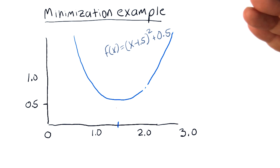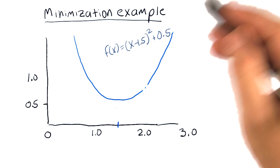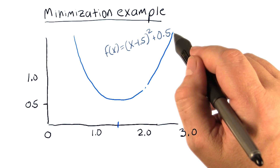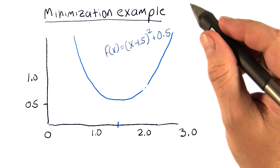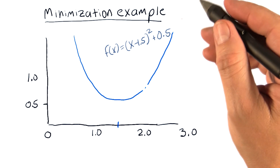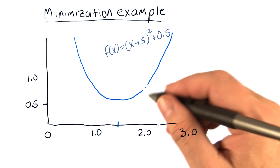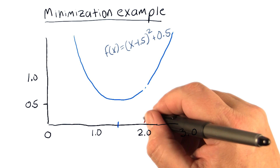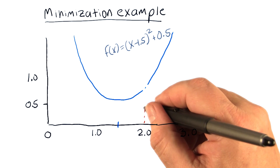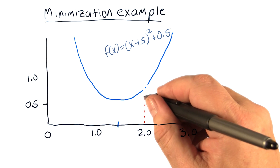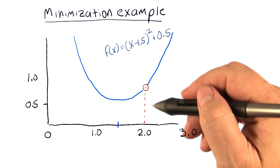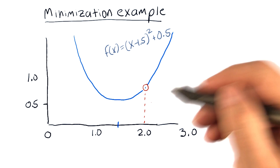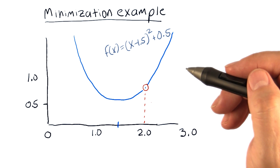Now, the optimizer or the minimizer doesn't know that — we can tell by looking at the equation, but the minimizer has to figure it out on its own. So let's suppose we tell it: hey minimizer, why don't you start with a guess of 2.0 and see if you can figure out from there what it is.